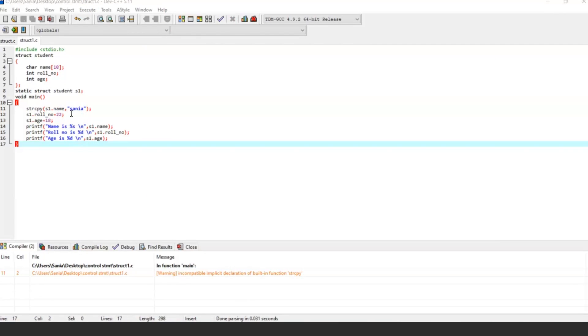In our next program using structure, we are using another way to declare variable and initialize the structure members. As you can see, we have declared variable outside the structure curly bracket. And inside the main function, we have initialized the structure members. So, now let's run the program.